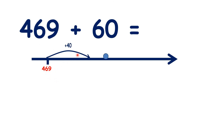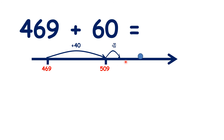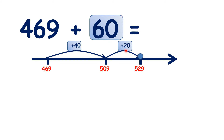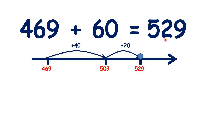Well, if we add 40, that takes us to 509, because we know that 46 plus 4 is 50. So now we've added 40, so we need to add another 20. And that takes us to 529, because we know that 50 plus 2 is 52. So we added 40, then added 20, which means that we added 60 altogether, and that gave us our answer, 529.